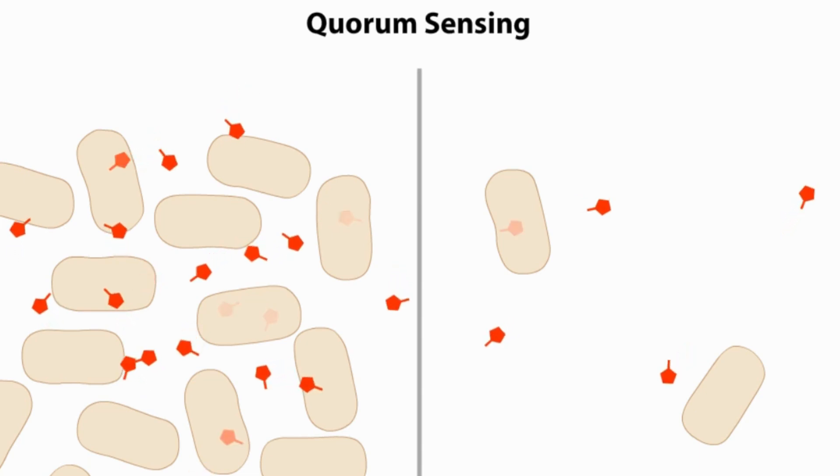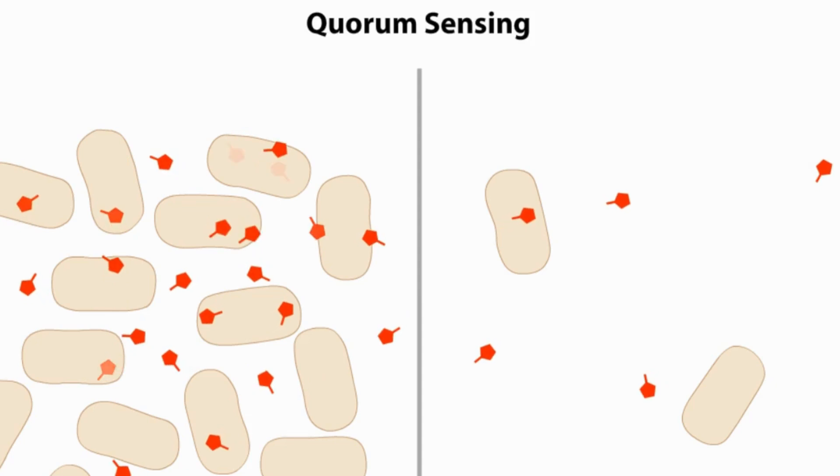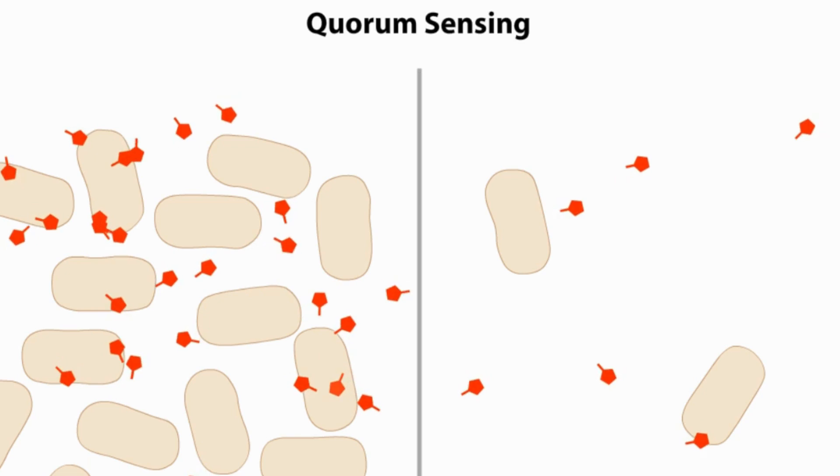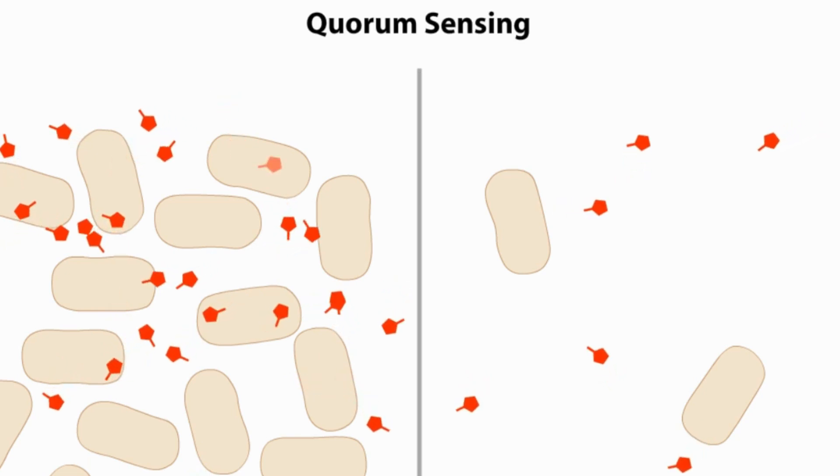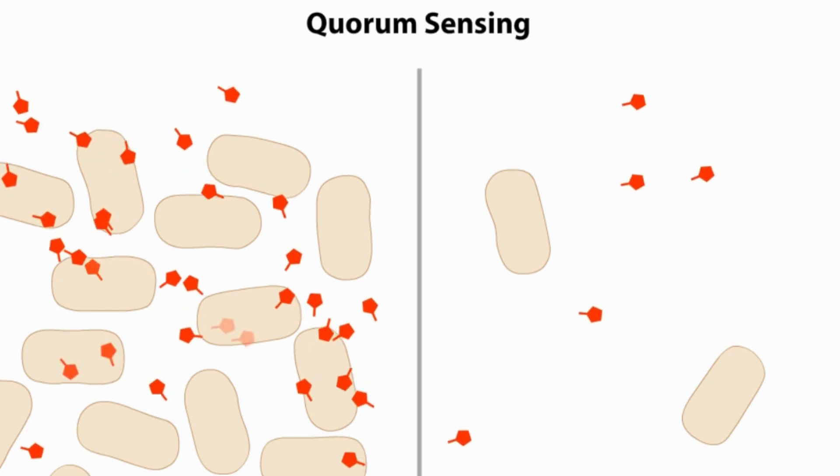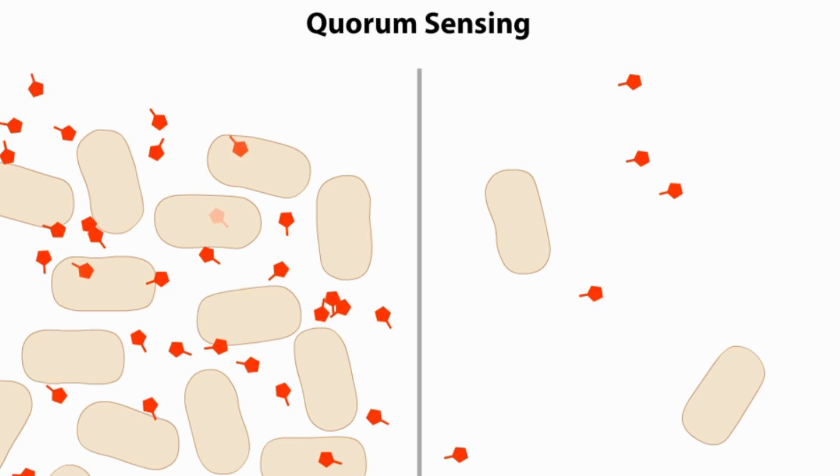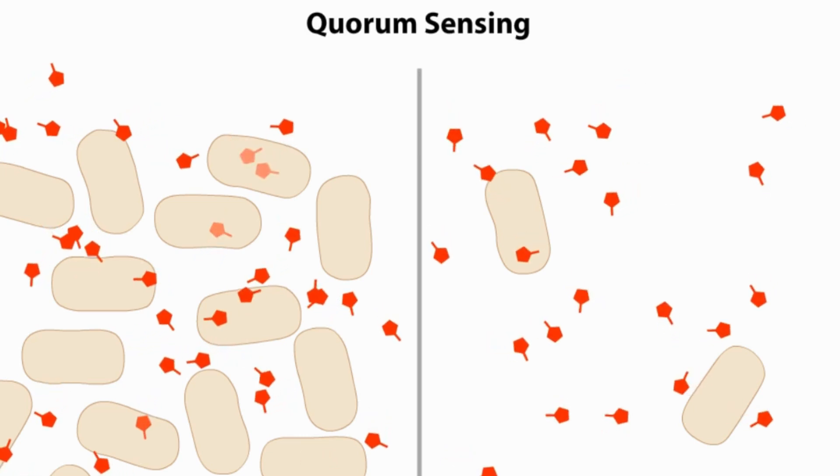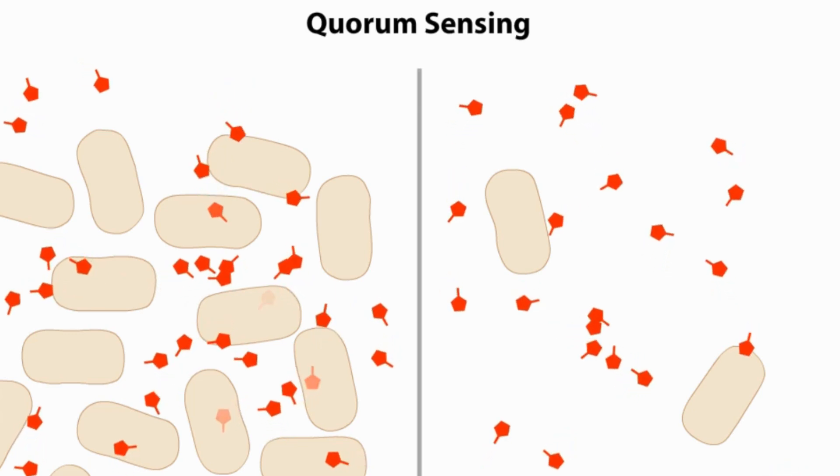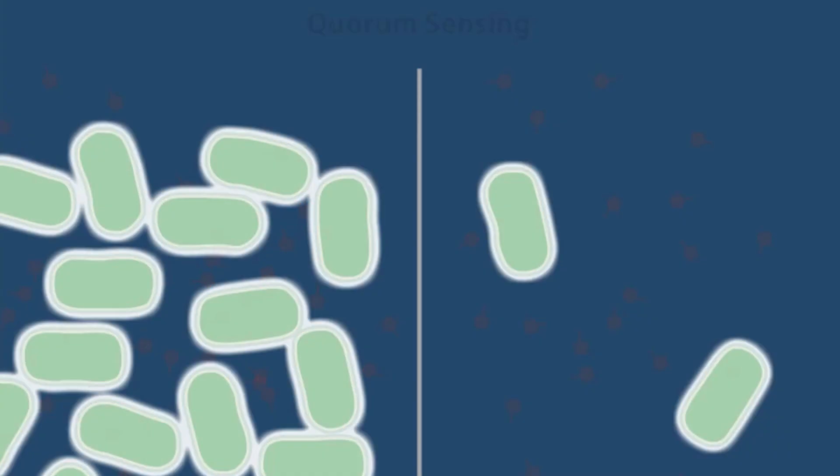The more cells in a given space, the faster the autoinducer builds up and the more likely it will start the process of luminescence response. Under laboratory conditions, the artificial addition of this autoinducer to the appropriate concentration will even cause cells grown at low densities to glow.